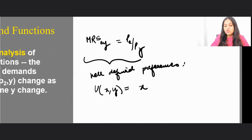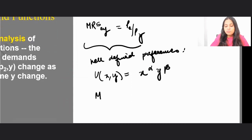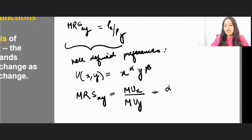So I know that my MRS_xy will be given by MU_x by MU_y. This would be given by alpha x to the power alpha minus 1, y to the power beta, upon beta x to the power alpha, y to the power beta minus 1.